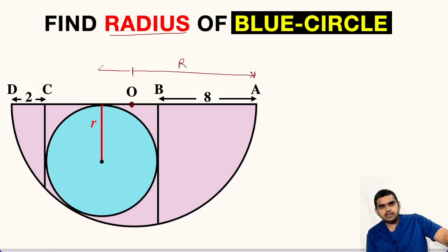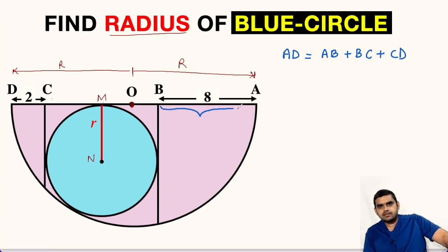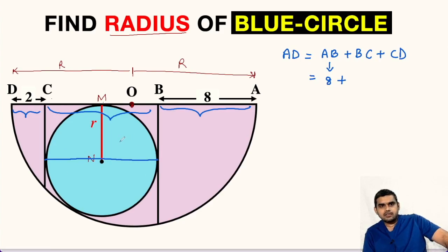So this side can be written as capital R. Now let us name these two points: this point as M and this point as N. We can write AD, that is the diameter of this semicircle, as AB plus BC plus CD. AB is 8 units as given, BC will be the diameter of this circle, so that is 2 times small r.